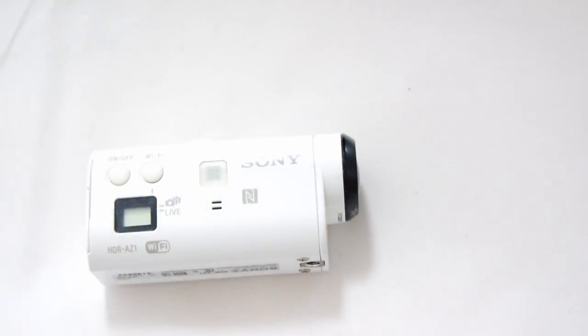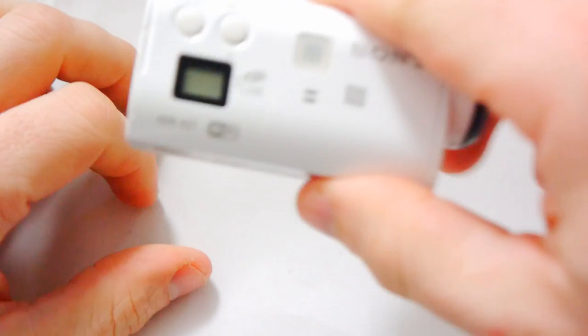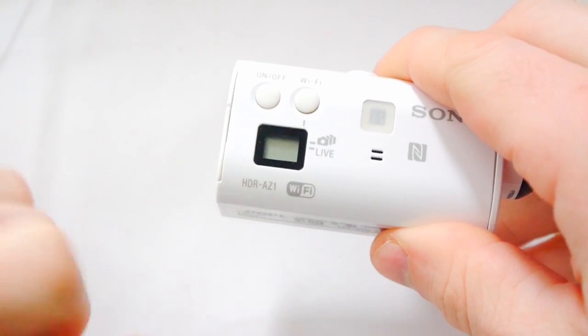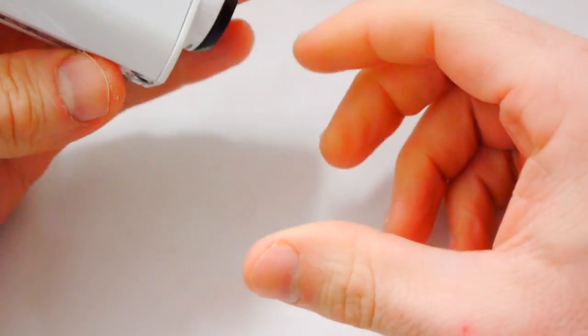This is the Sony Action Camera Mini, otherwise known as the HDR-AZ1. See the model number there. Now this is the smallest one that Sony has.